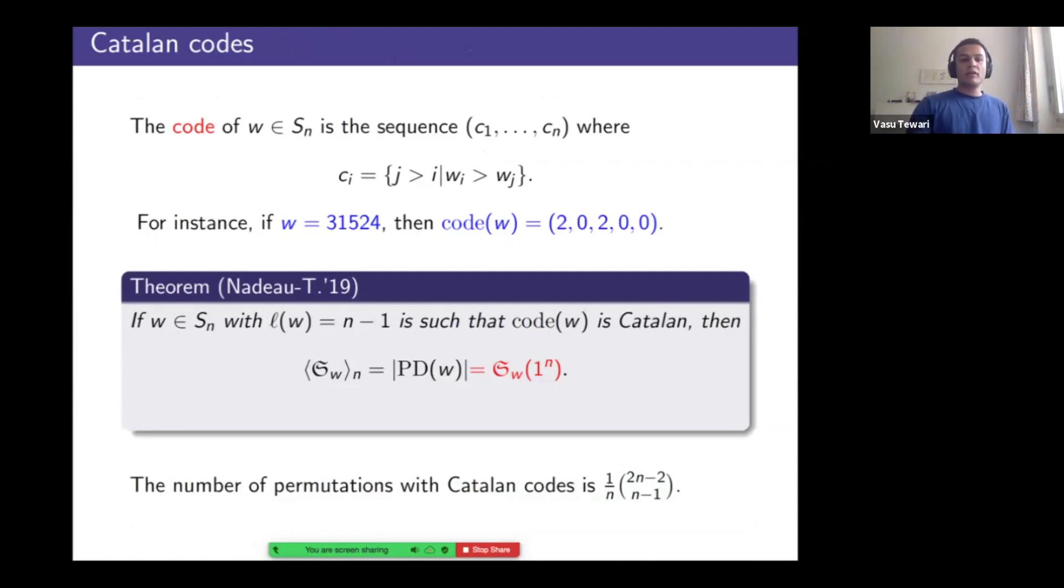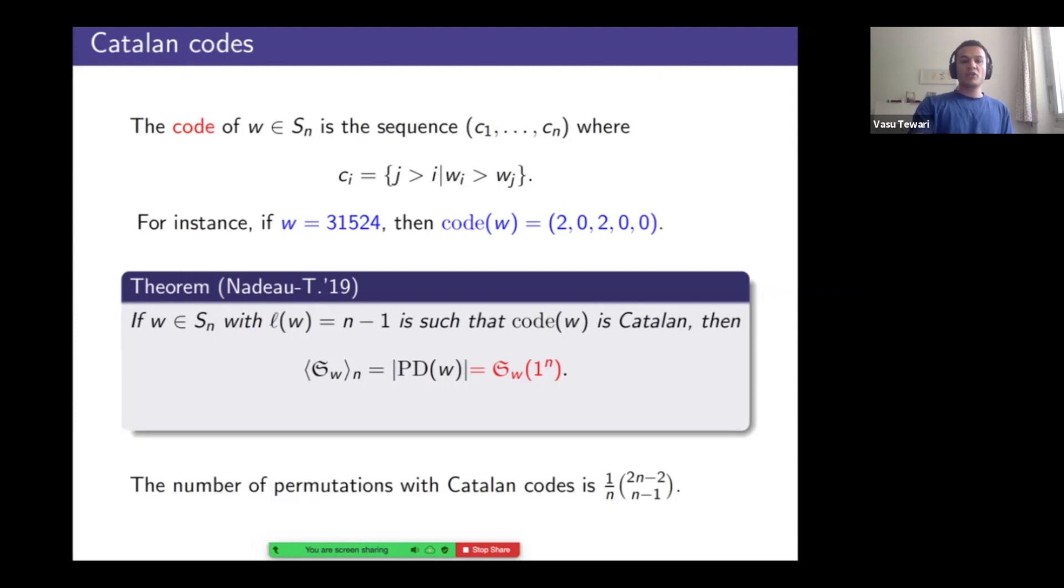Right. So this already gets us our first result. Recall the notion of a code. I'll do this by example as well. If you hand me a permutation, I can attach a weak composition. For every position, I count the number of numbers that are smaller than the entry in that position. So three has two numbers smaller. So that's the two. One has nothing. So that's the zero. Similarly, 2, 0, 0. So for permutations whose codes are Catalan compositions, divided symmetrization is counting pipe dreams, otherwise known as, and this is important, it's the all ones evaluation of a Schubert polynomial. So for Catalan many permutations, we have some sense of what a sub w is.